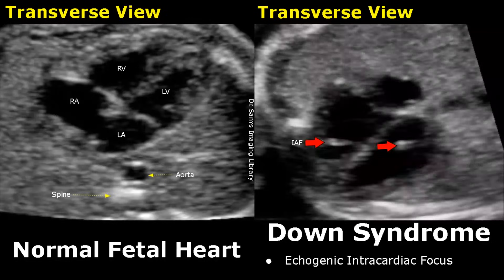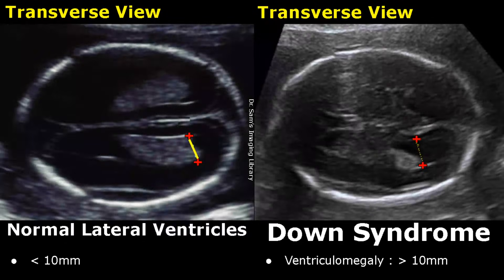In this image we see two echogenic structures, which increases the chance of having Down syndrome. Here is an image of the fetal brain showing normal lateral ventricles; their normal measurement is usually less than 10 millimeters.